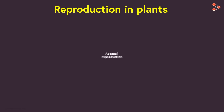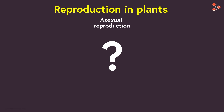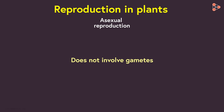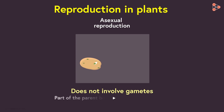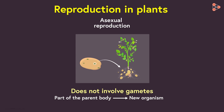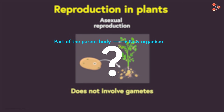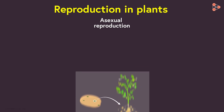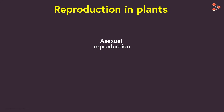Now can you guess what asexual reproduction will be? In contrast to sexual reproduction, asexual reproduction does not involve gametes. It is a type in which some part of the parent body will be capable of growing into a new organism. Interesting, isn't it? But which part of the parent body will grow into a new organism? Based on various factors, asexual reproduction is further categorised into subtypes.